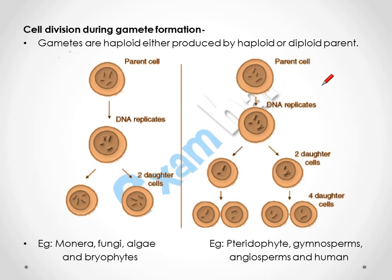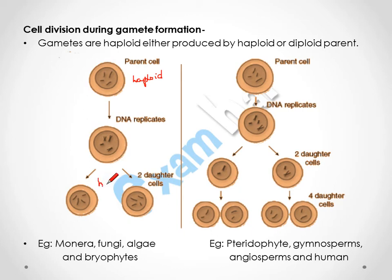Regarding cell division during gamete formation: whether gametes are produced by a haploid or diploid parent, gametes are always haploid. If the parent cell is haploid, its DNA replicates and produces two daughter cells, each containing one copy of the DNA, similar to the parent cell and also haploid. Examples include Monera, Fungi, Algae, and Bryophytes.